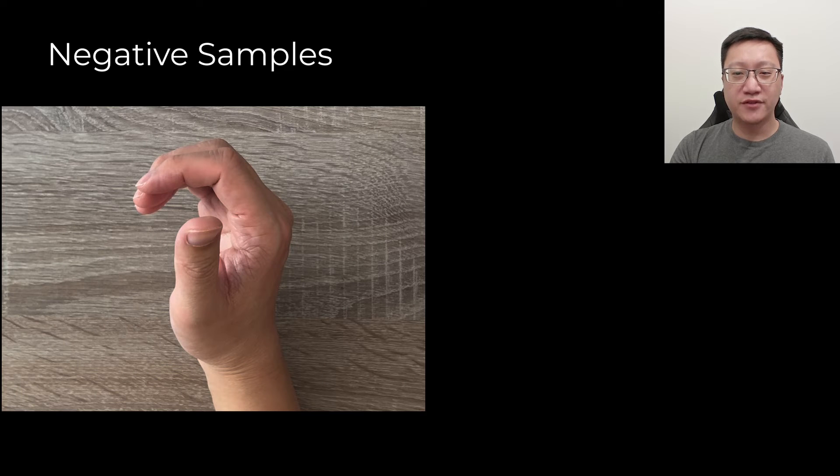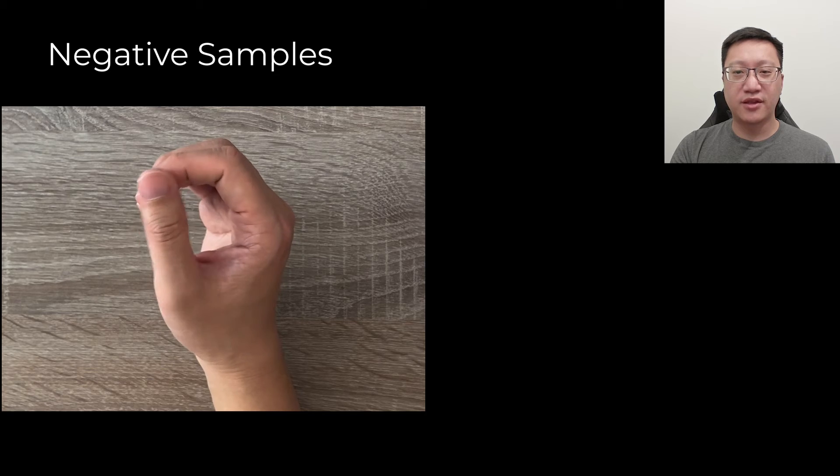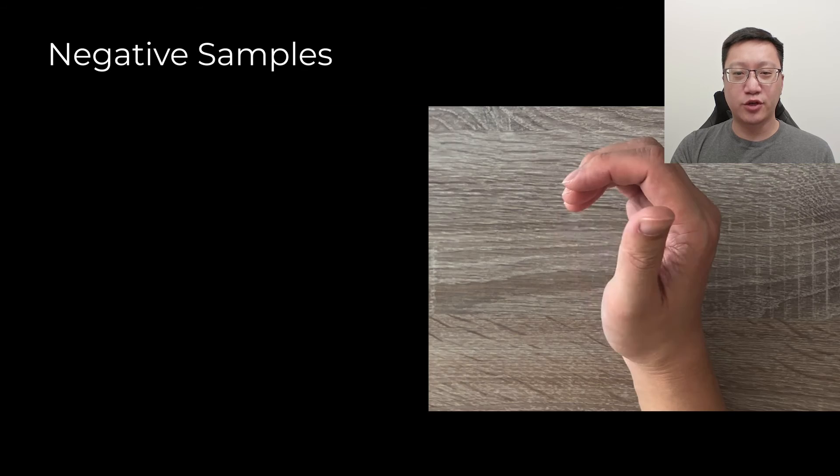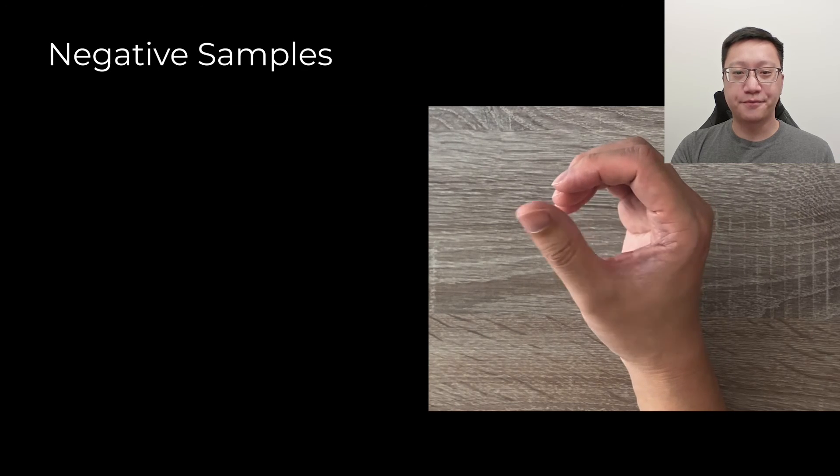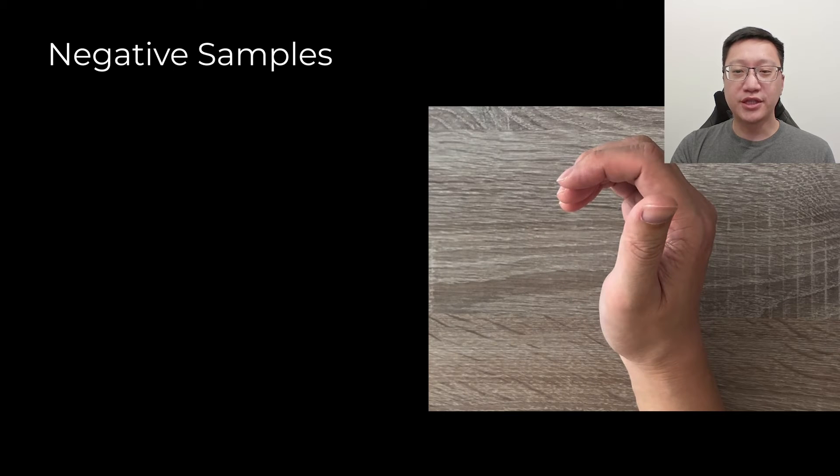We also collected negative samples to teach the model what motions are not gestures. Negative samples largely included motions that are almost gestures, such as sliding the thumb along the surface of the index finger or hovering the thumb around the index finger. These motions, in essence, carve out the negative space around the positive gestures.